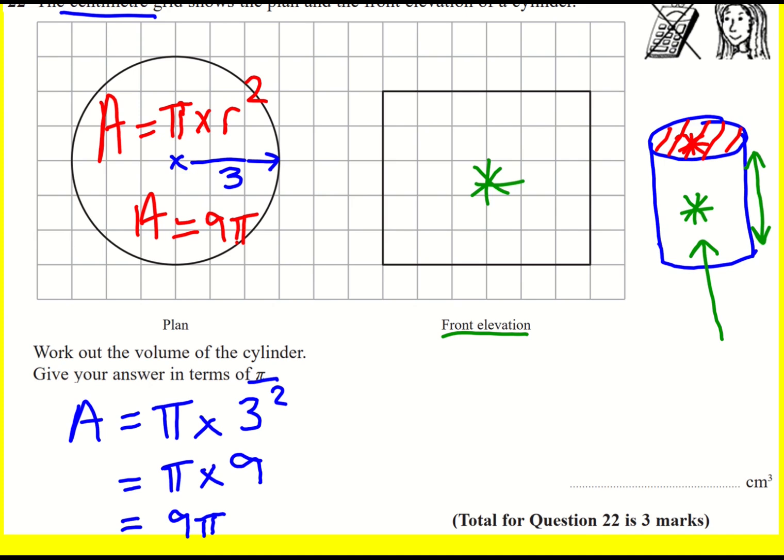So we've got our cross-sectional area, our cross-sectional area is nine pi, and now I need to multiply it by the height, the height of the cylinder. Well the height of the cylinder is the number of squares here. The number of squares here is five.